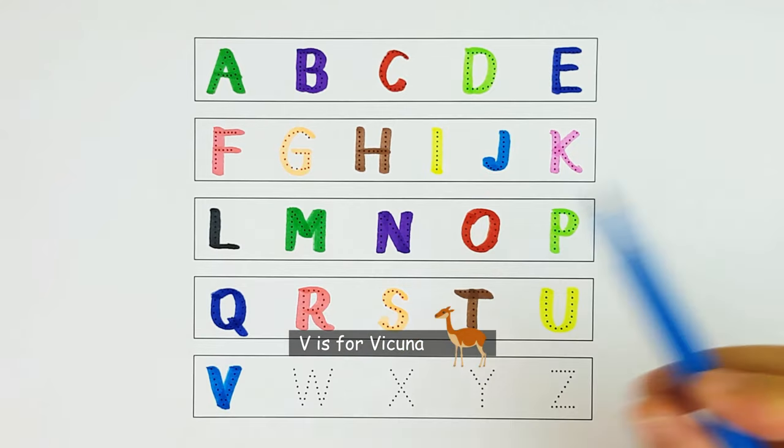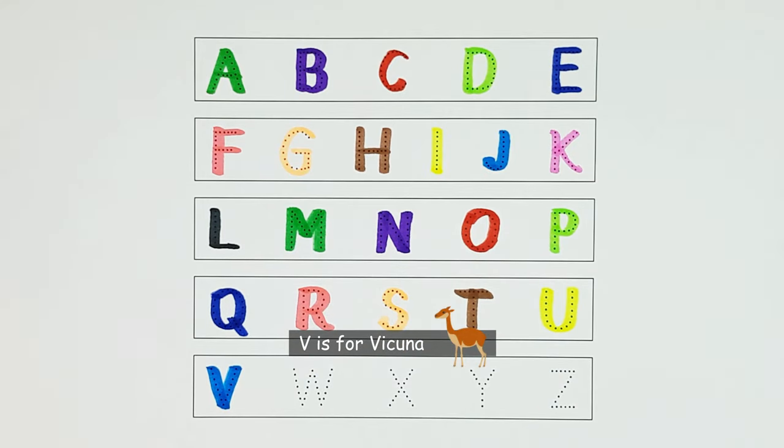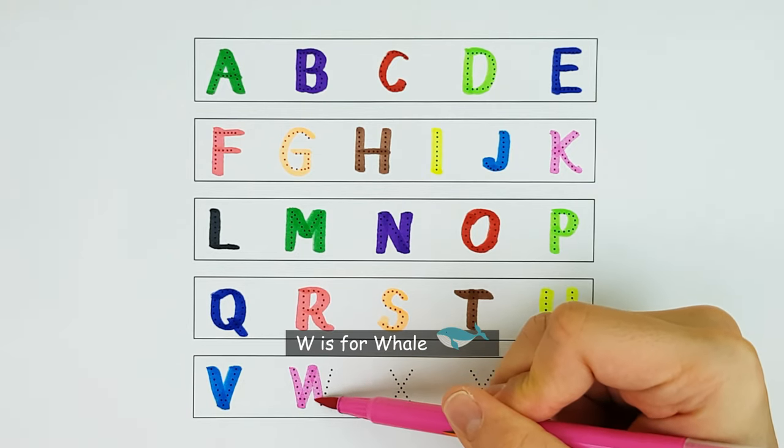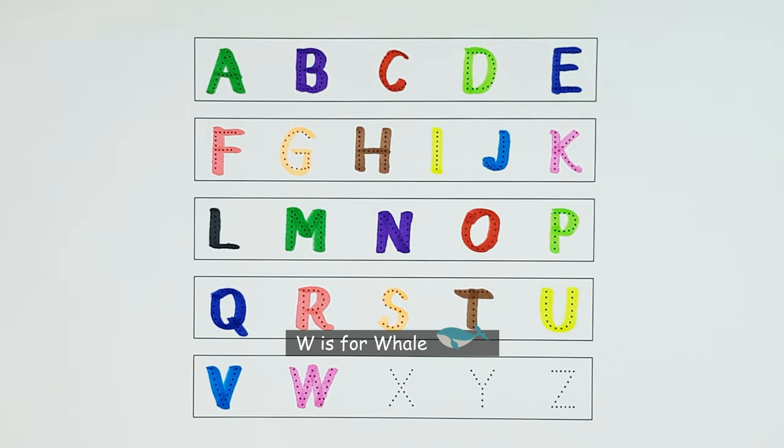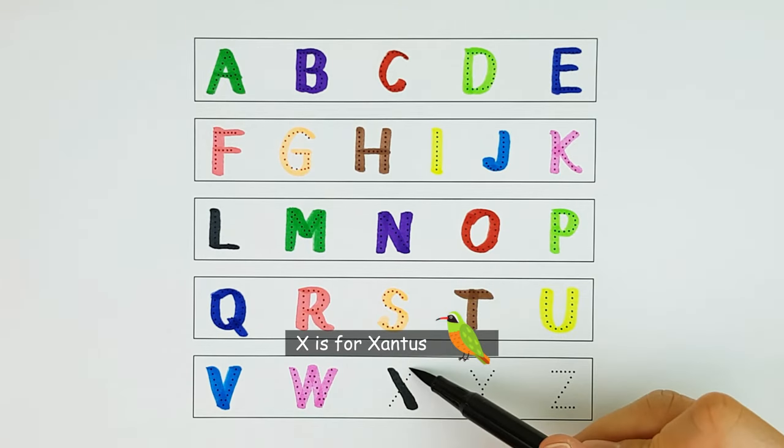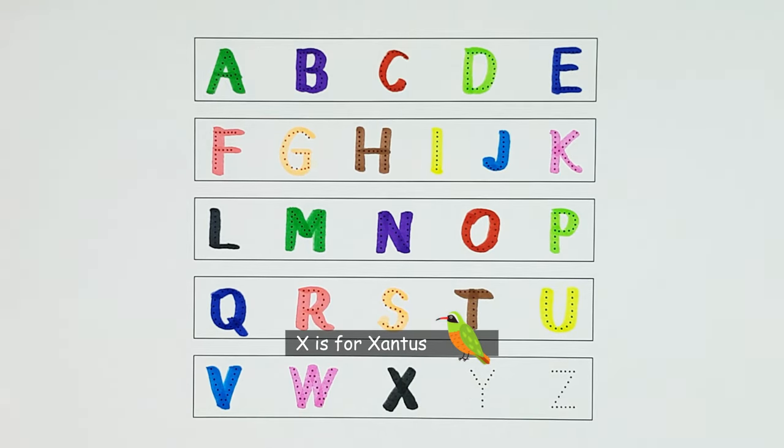V. V is for Vicuña. V. W. W is for Whale. W. X. X is for Xantus. X.